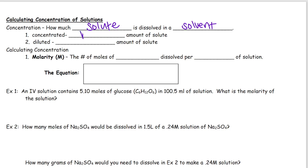Concentrated means that there is a high amount of solute, and diluted means that there is a low amount of solute per certain amount of solvent. So per given amount of solvent.